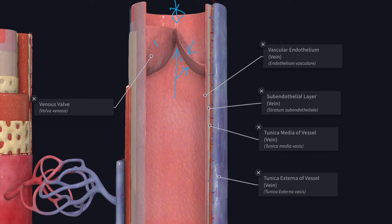Valves are absent in very small veins, in veins within the cranial cavity or within the vertebral canal, and in the vena cava and some other veins. The flow of blood through the veins is assisted by contraction of the muscles in their walls and also by contraction of the surrounding muscles, especially when enclosed in deep fascia.